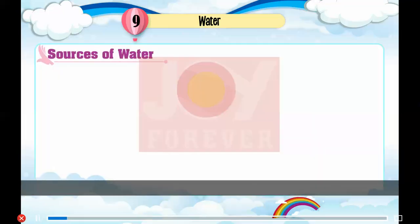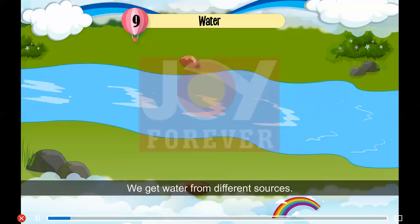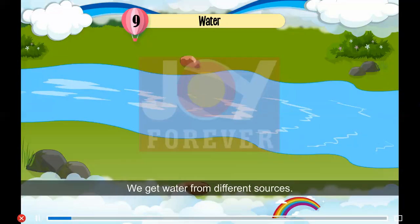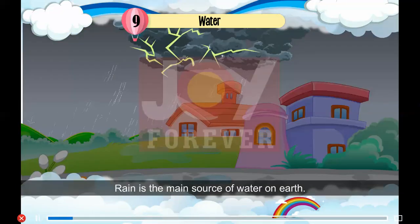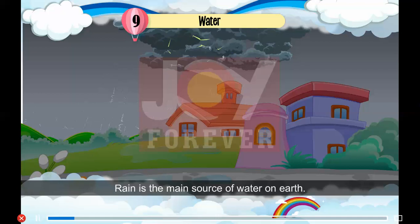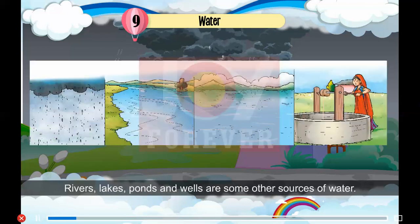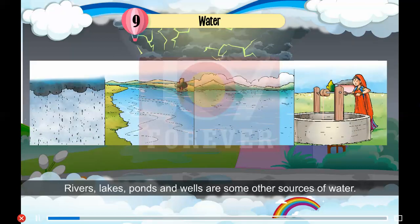Sources of Water. We get water from different sources. Rain is the main source of water on earth. Rivers, lakes, ponds and wells are some other sources of water.